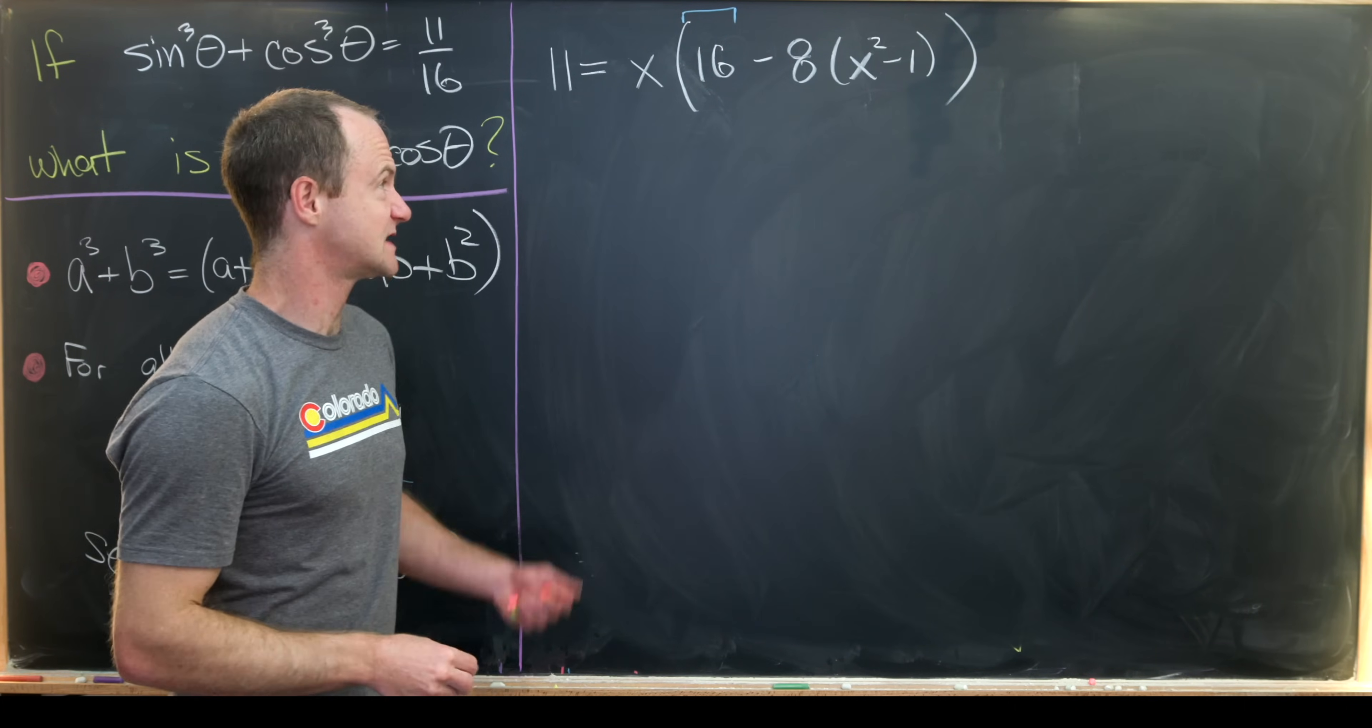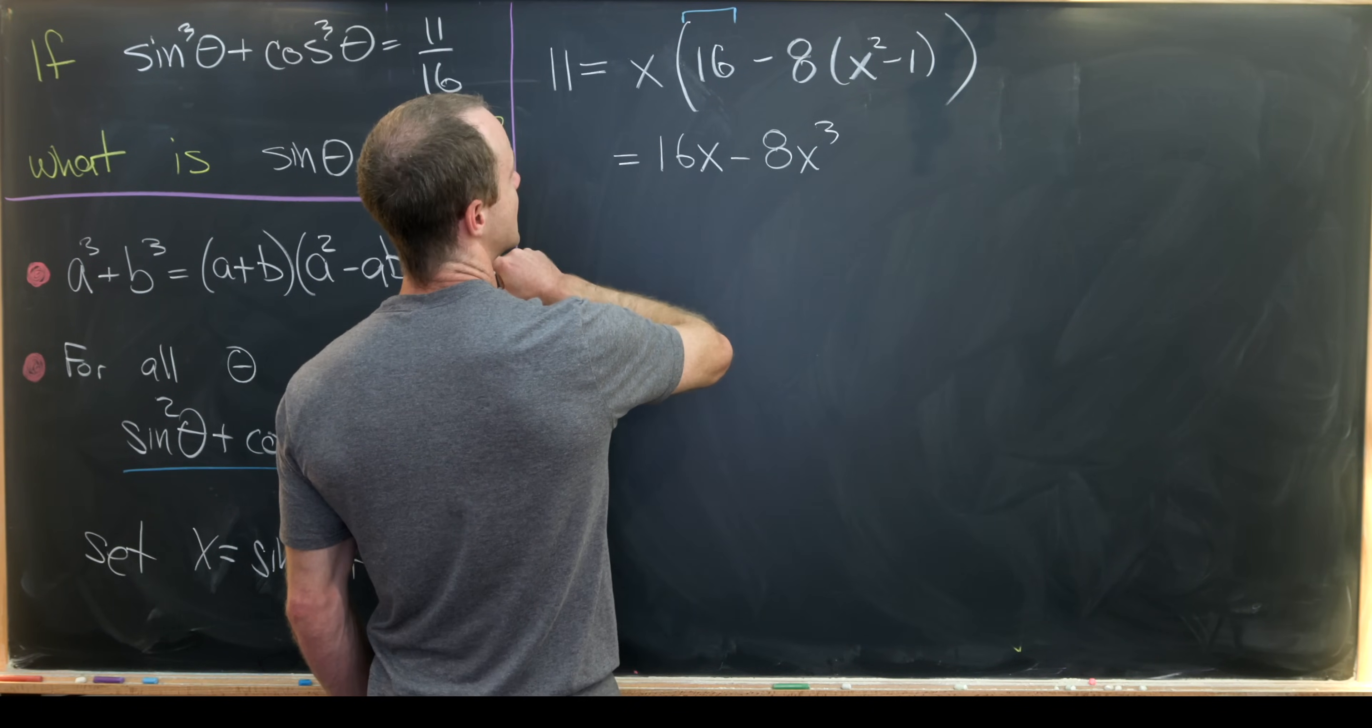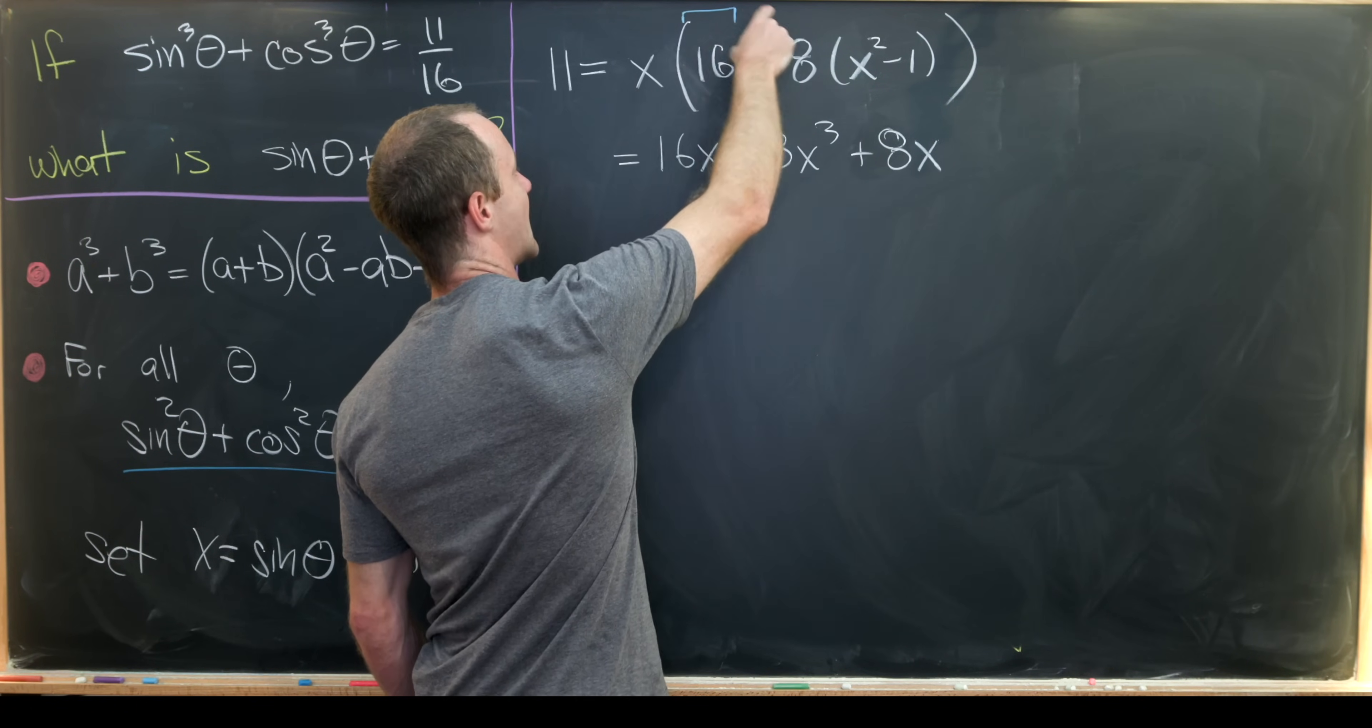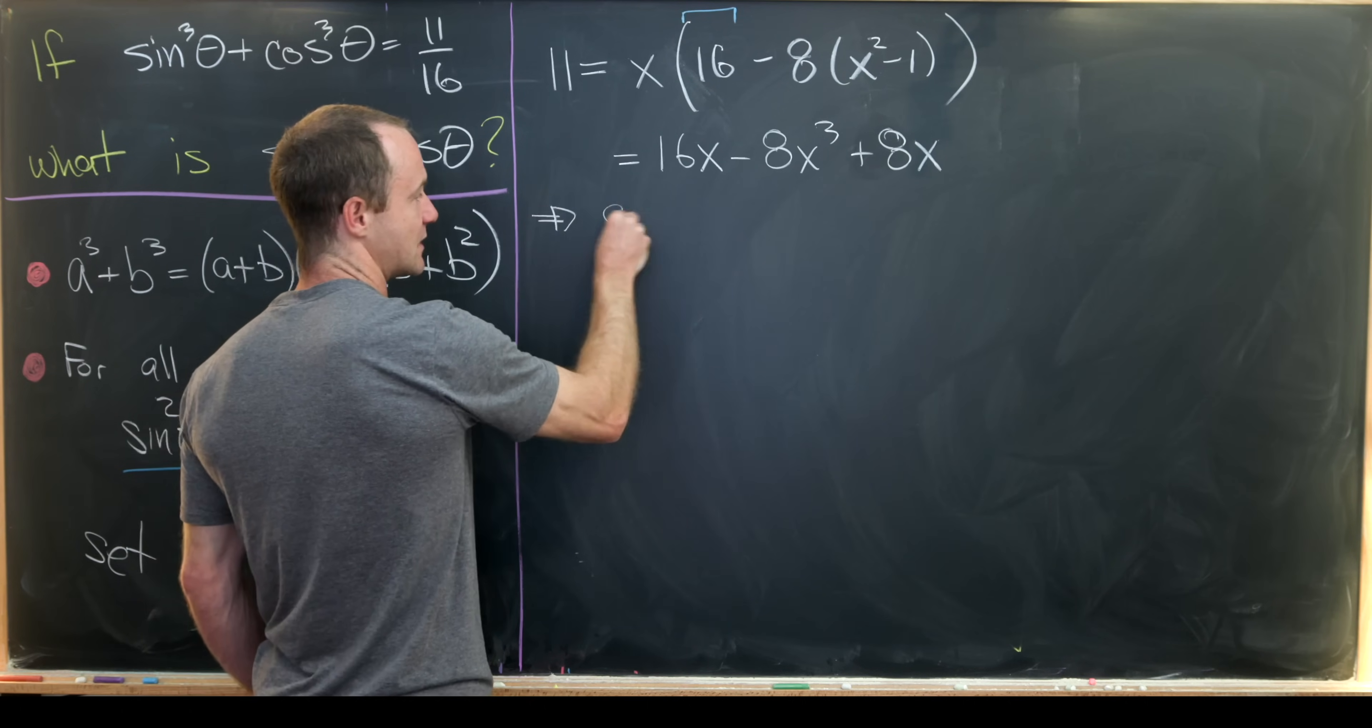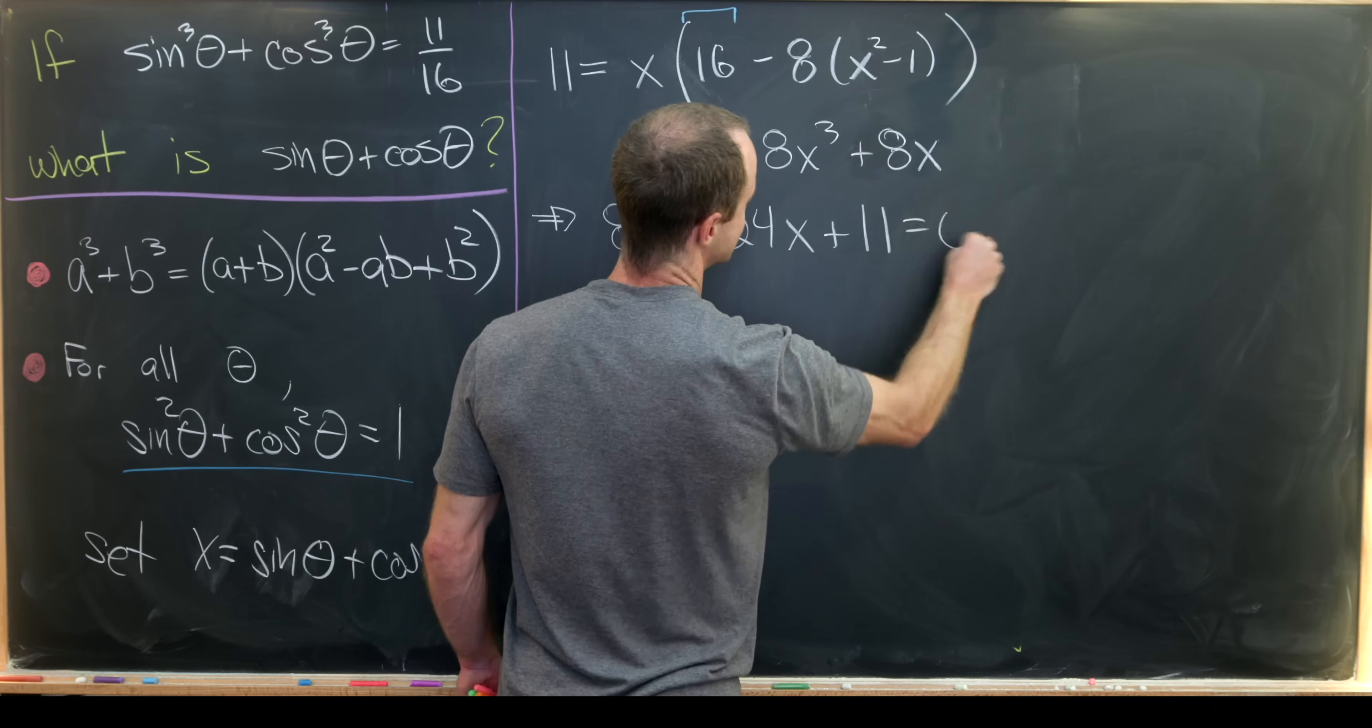Now I think maybe our best bet is to expand this out. This gives us 16x, and then it'll be minus 8x cubed, and then plus 8 times x. So that's what we get from distributing this x through as well as this minus 8 through. So putting this all together, we see that we have the cubic polynomial equation 8x cubed minus 24x plus 11 equals zero.